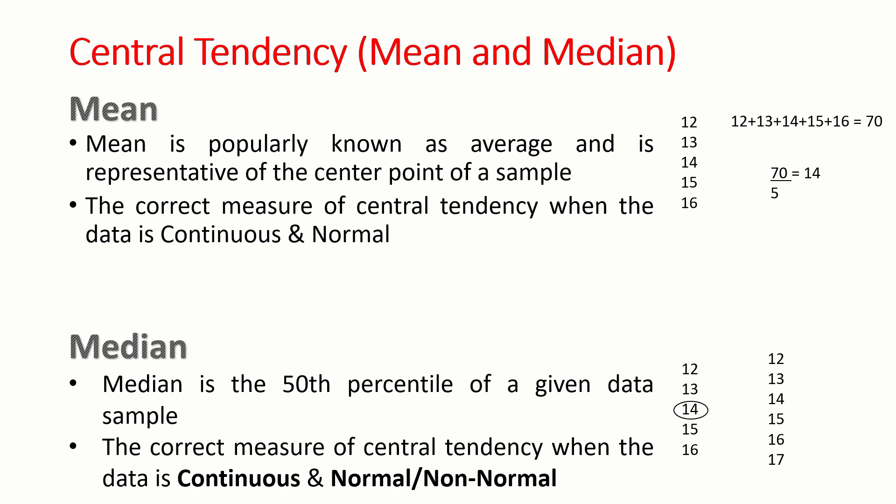If your data set has an even number of values, like 12, 13, 14, 15, 16, 17, then the average of the two center numbers is the median — which is 14 plus 15 divided by 2, giving 14.5. So data set 2 has a median of 14.5.